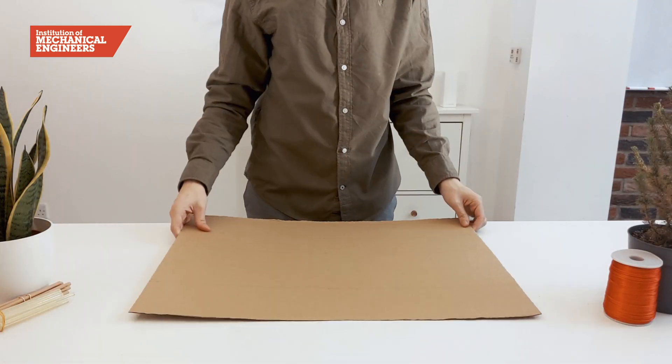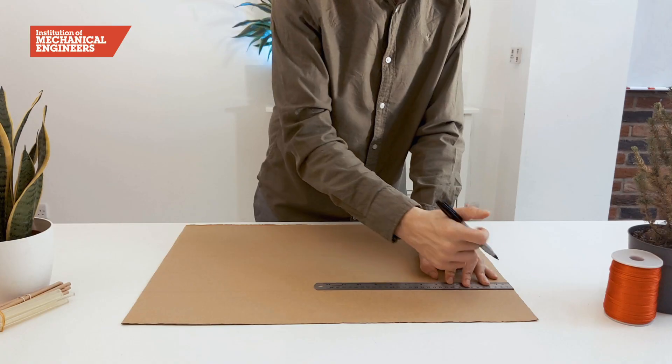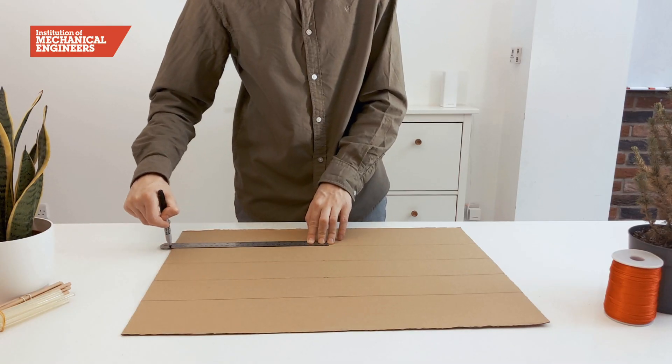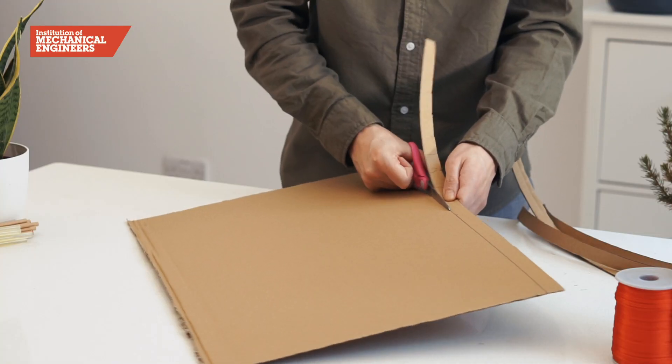First we construct the track. Use a sheet of corrugated cardboard for the base and begin by drawing four parallel lines along its length. To make the rails cut four strips of cardboard and carefully glue them along the lines we've just drawn.